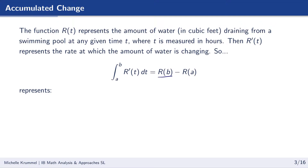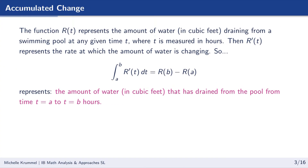So the integral of r prime of t dt from a to b gives us r of b minus r of a. Remember, r of b represents the amount of water draining from the pool at time t equals b, and r of a is the amount of water draining at time t equals a. Subtracting gives us the difference — in other words, the amount of water that has drained during this time interval, measured in cubic feet, between t equals a and t equals b hours.